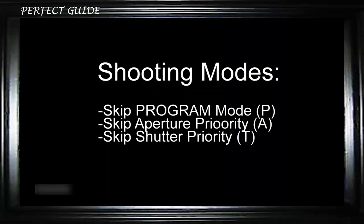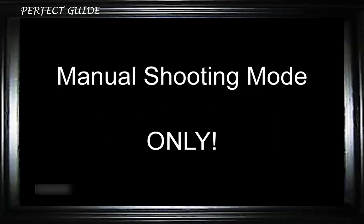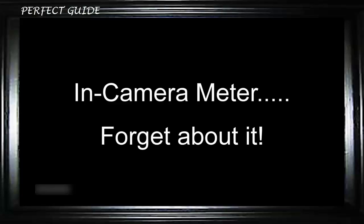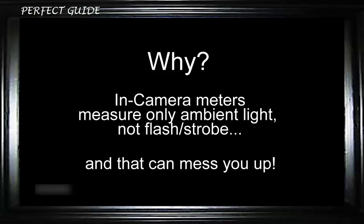Forget about all the automated features you normally use with a flash on your camera. You don't want to use program mode, aperture priority mode, or shutter priority mode when doing studio portraits with strobe lights, umbrellas, and light boxes. You want to use manual shooting mode — meaning manual adjustment of aperture and shutter speed. More importantly, forget completely about your in-camera meter. Your in-camera meter only measures ambient light; it does not measure strobe light or help you achieve an automatic reading of your strobe exposure.